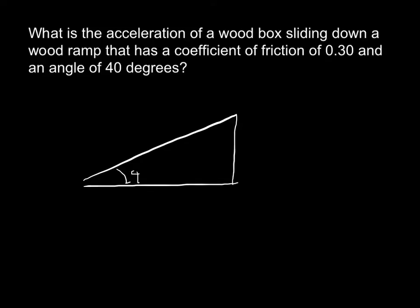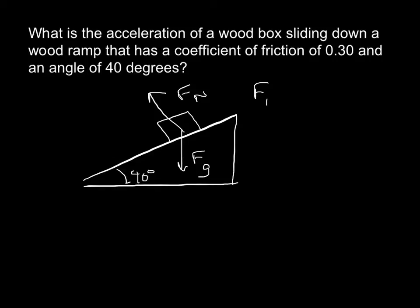We have 40 degrees as our angle. We've got a wood box, gravity pulling it down, and a normal force acting on it. As we know from the previous video, the normal force on an inclined plane is the force of gravity times the cosine of the angle.